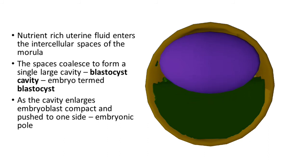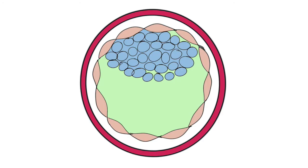As more and more uterine fluid enters and the cavity enlarges, the embryoblast, which is the inner mass of cells, compacts and is pushed to one side, and that side is called embryonic pole.